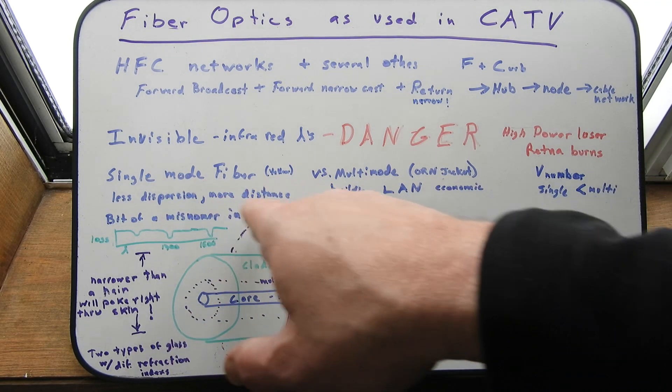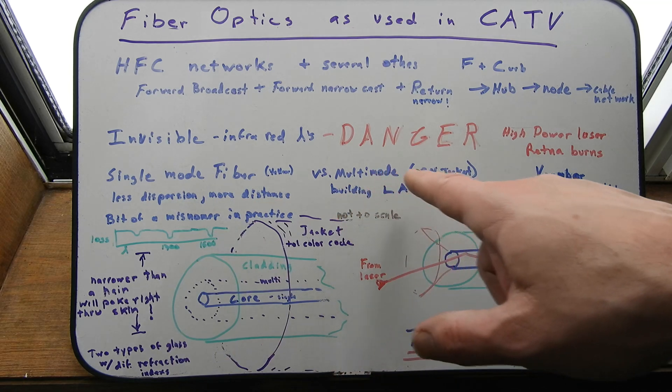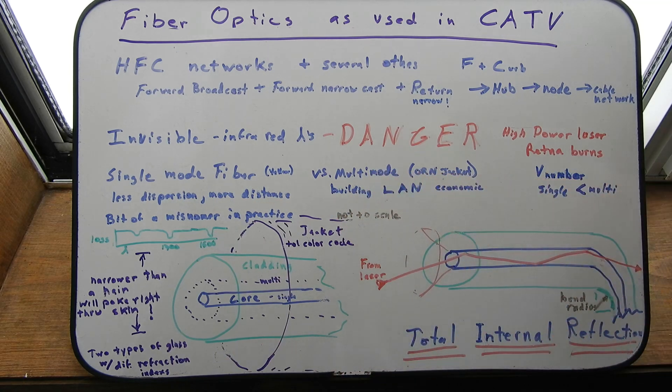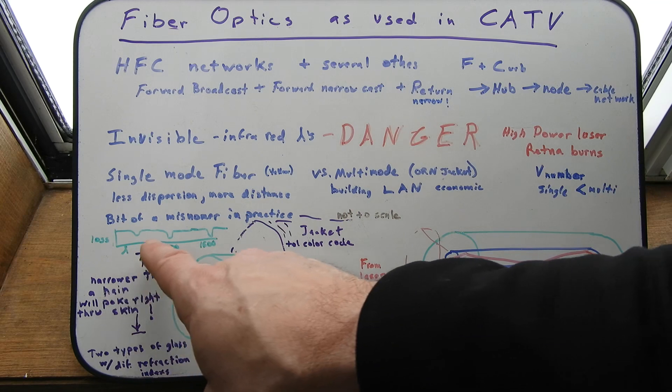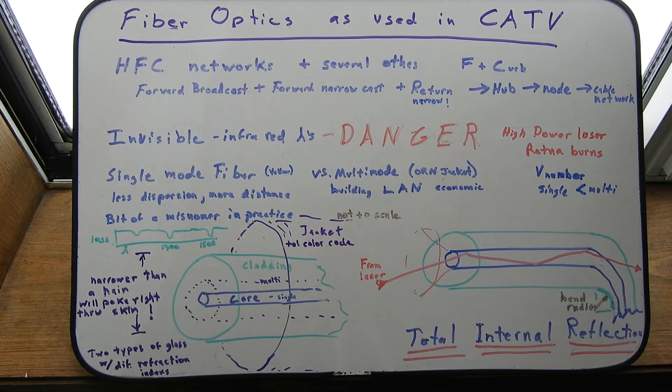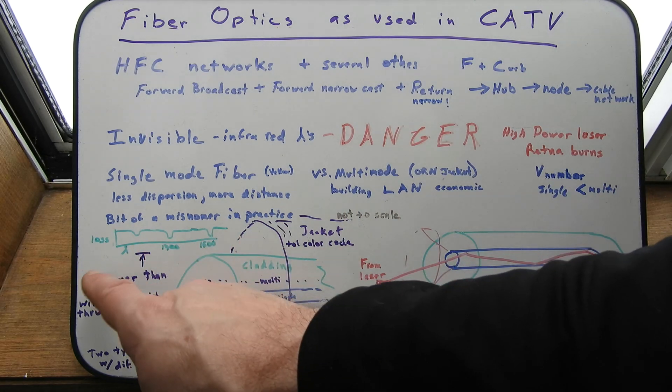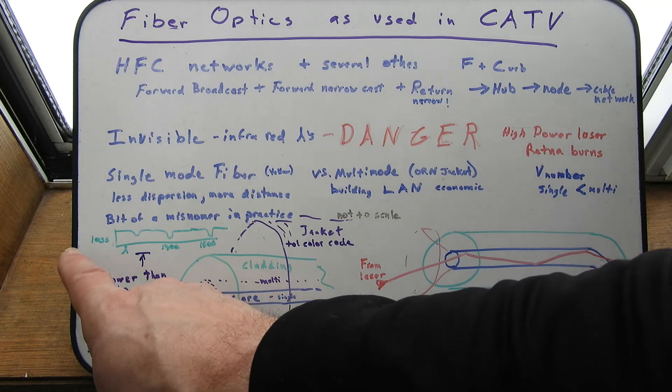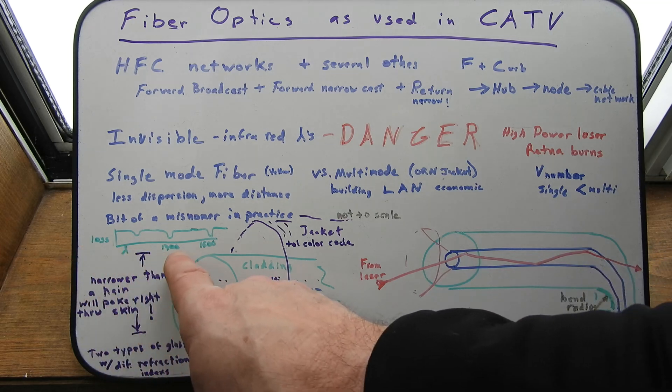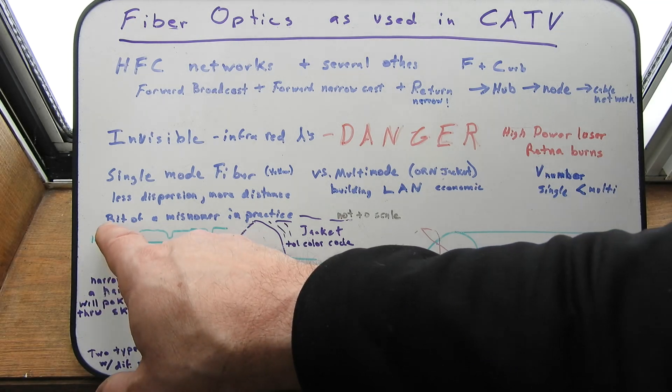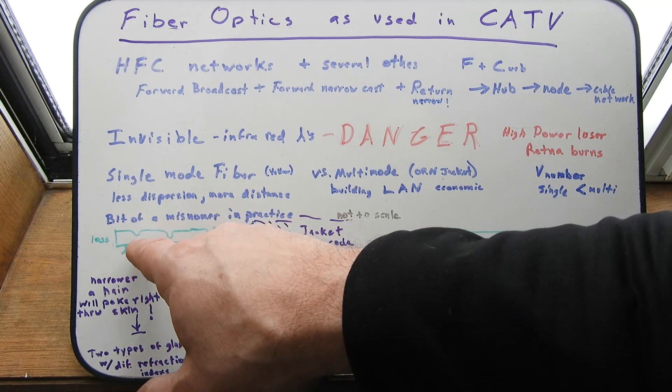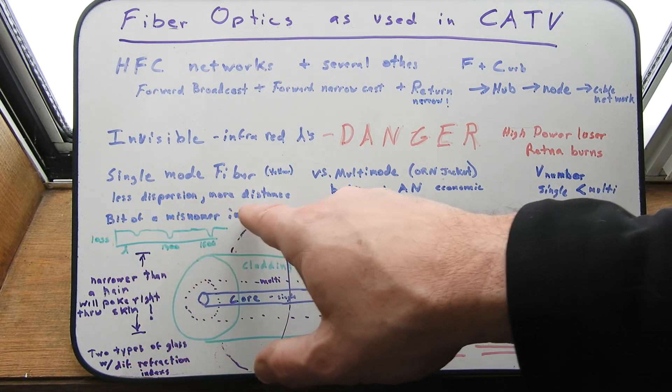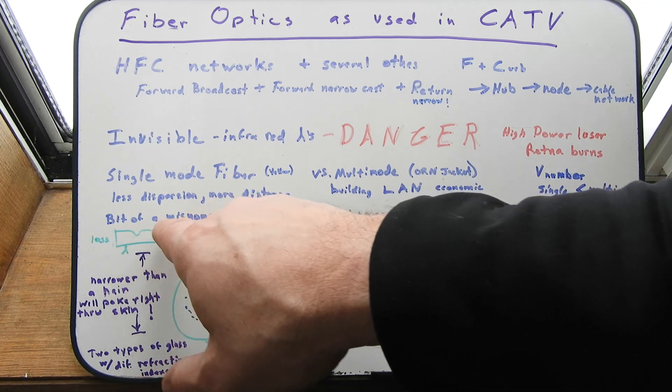So, single mode fiber, as I said, less dispersion, more distance. Pretty much all we use. There's something called a V number. I won't get into that. But if you looked at the frequency response, they actually would say wavelength response. Sometimes we even talk about colors, even though it's all invisible light. But if you charted nanometer wavelength as you went through, you would see there's actually little, this is loss. So it's a higher loss. There's actually little dips where you've got areas of low loss.